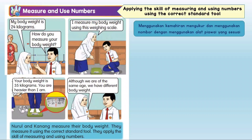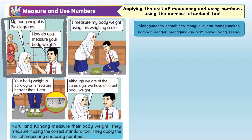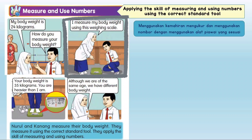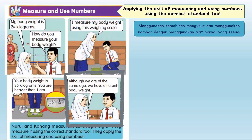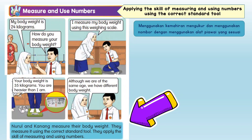My body weight is 24 kilograms. How do you measure your body weight? I measure my body weight using this weighing scale. Your body weight is 35 kilograms — you are heavier than I am. Although we are of the same age, we have different body weight.